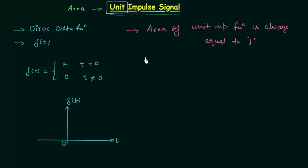We can calculate the area by integrating δ(t) from minus infinity to infinity, and it is always equal to one.